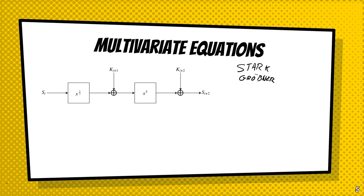We take a very simple example: a typical cipher using the uncubing map — the compositional inverse of the cubing map. The input Si has a key added, is cubed, and then another key is added, giving Si+2. We take Si, raise it to power 1/3, add key Ki, cube that, add another key, and call that Si+2. This is the simple forward evaluation.